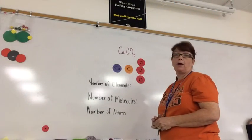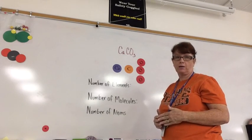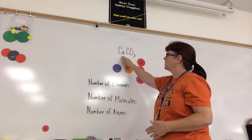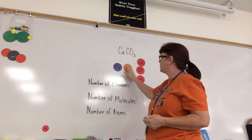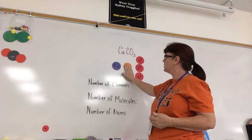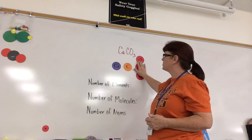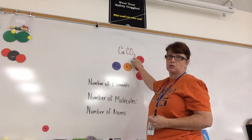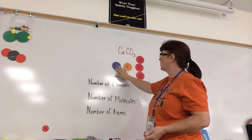I want to go over how to count the number of elements, the number of molecules, and the number of atoms in a chemical formula. This is our chemical formula: CaCO3. It can be represented by these circles. I have Ca for calcium, C for carbon, and then I have 3 atoms of oxygen because I have O3. Remember that the subscript only applies to the element that it follows.